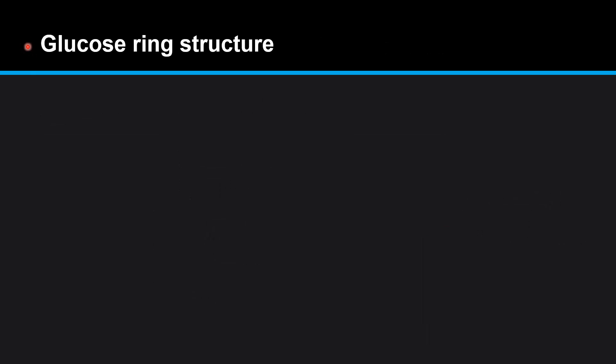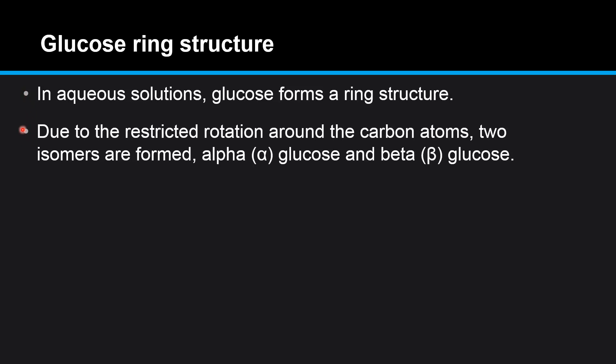Next, we look at the glucose ring structure. In aqueous solutions, glucose forms a ring structure. Due to the restricted rotation around the carbon atoms, two isomers are formed: alpha-glucose and beta-glucose.